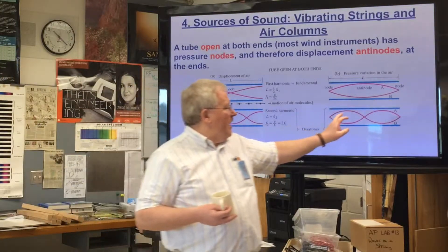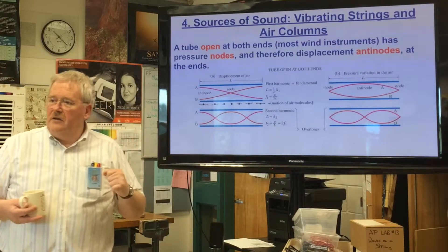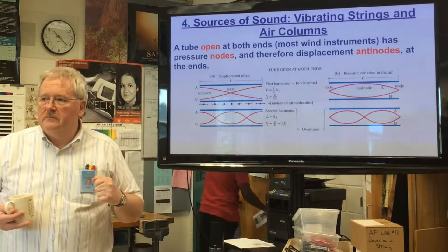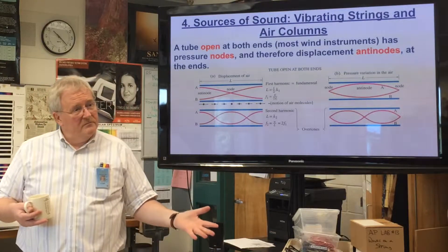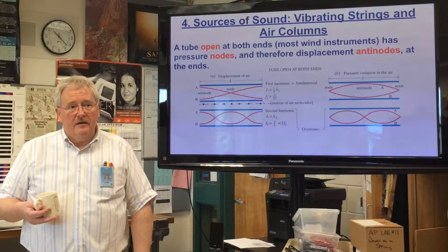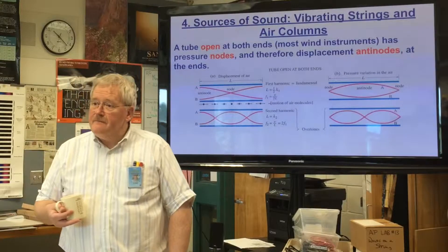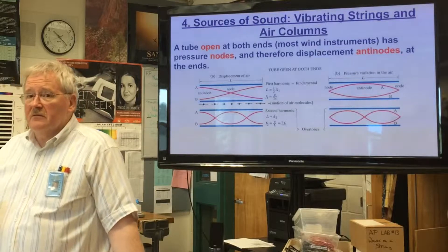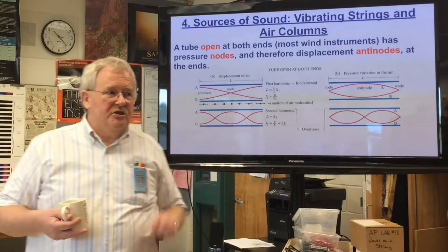In the case of the second harmonic, one full wavelength fits into the whole length. So to find the wavelength of the second harmonic, we just look at the length of the tube — one wavelength fits in the length of the tube.